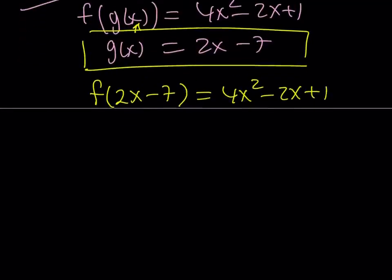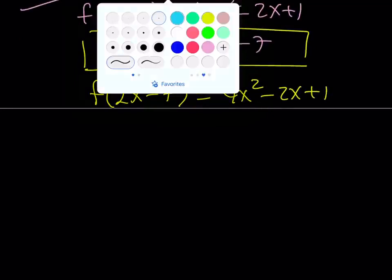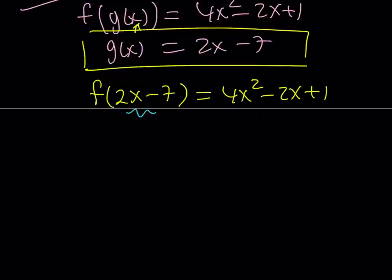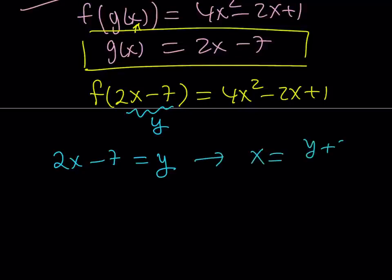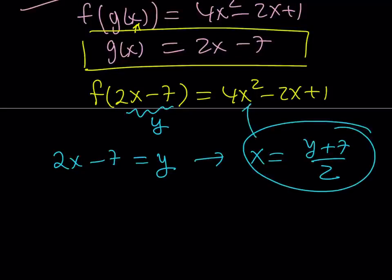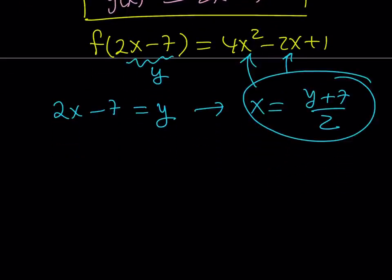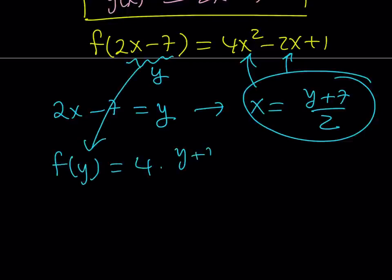My goal is to find f of x, but we can't find it directly, so let's do it indirectly. Let's go ahead and set 2x minus 7 equal to y. If I can find f of y, I can find f of x — we can use them for substitution, which is my favorite method. From here, x can be written as y plus 7 over 2, and now I can use it everywhere I see x. So f of y becomes 4 times quantity y plus 7 over 2 quantity squared minus 2 times y plus 7 over 2 plus 1.